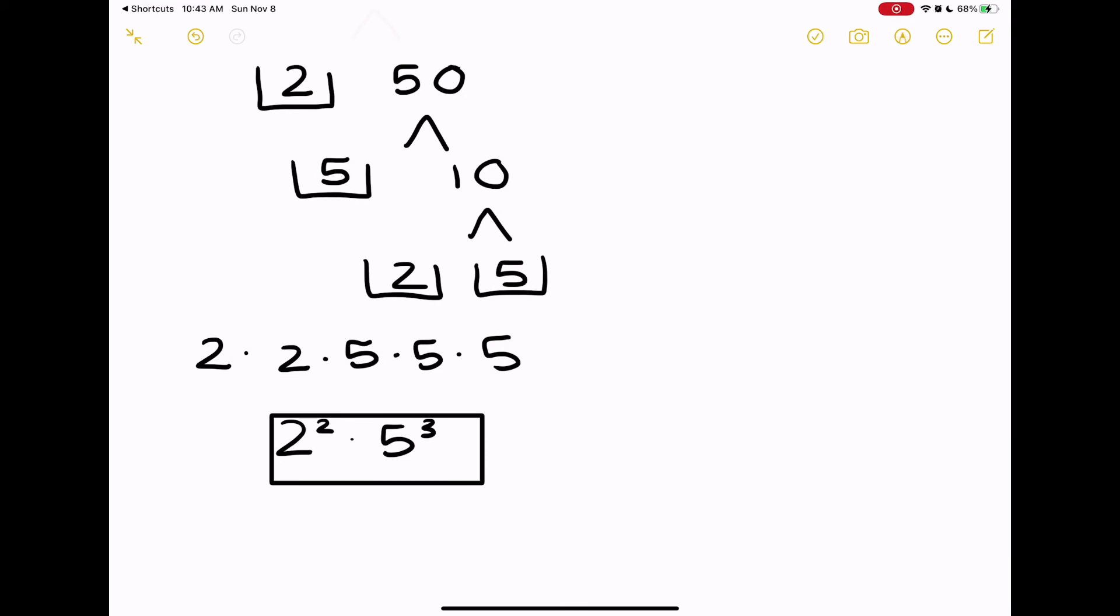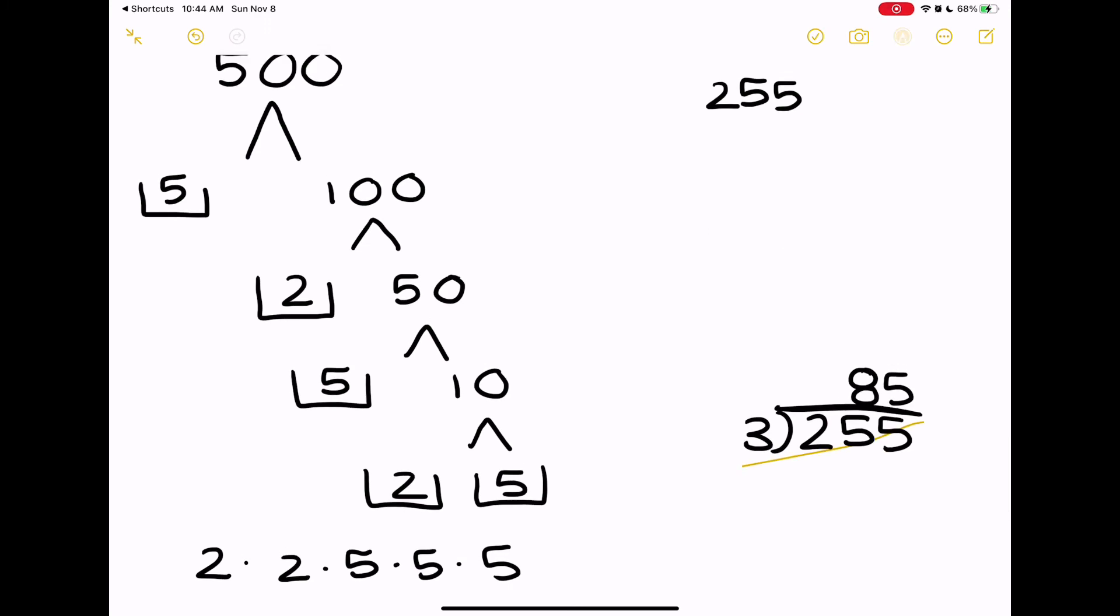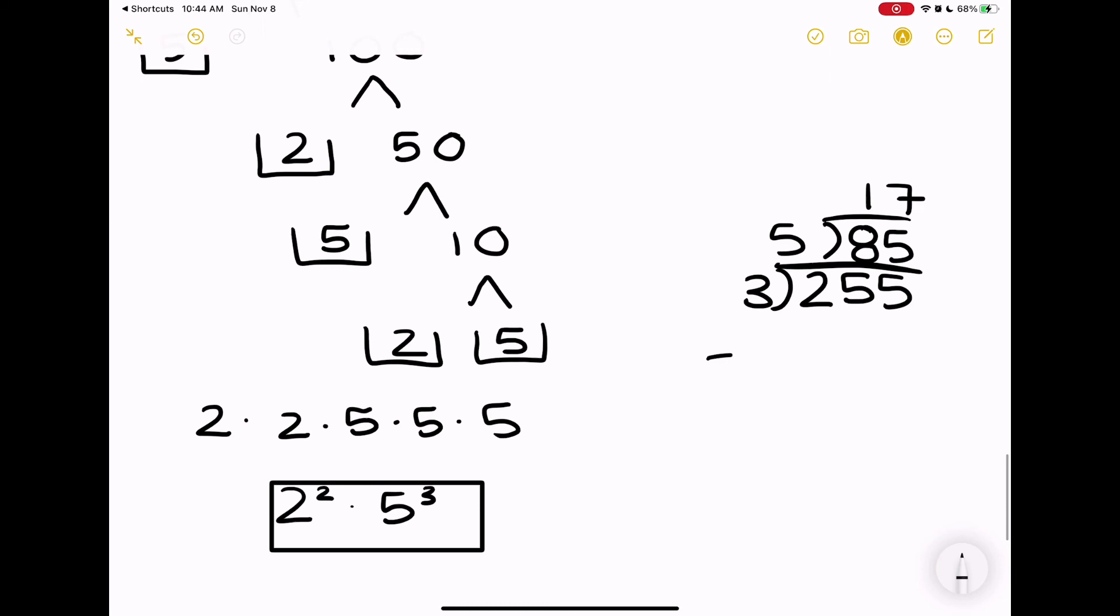Now let's go ahead and use the other method, the dividing method. So we can take 255. There are many different numbers we can divide this by, but I chose 3 and then we'll get 85, which can then be divided by 5 because it ends in 5, and then we'll get 17. So the answer is 3 times 5 times 17, and there's no doubles so that's just our answer.